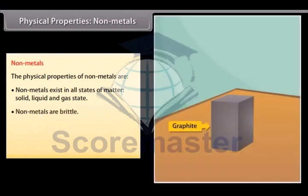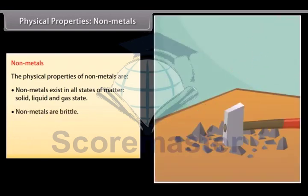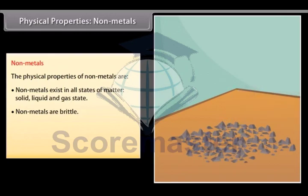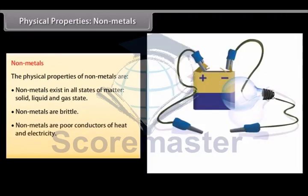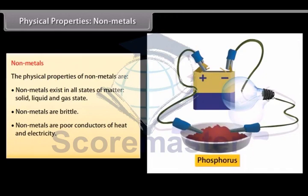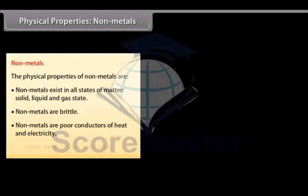Non-malleable and non-ductile. Non-metals are brittle and cannot be rolled into wires or beaten into sheets. Poor conductors of heat and electricity. Non-metals are poor conductors of heat and electricity. Graphite carbon is an exception as it is a good conductor of electricity and is used in making electrodes.